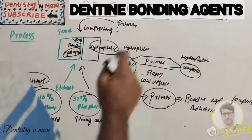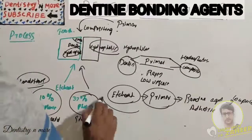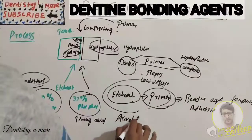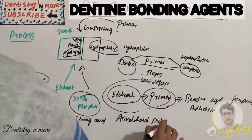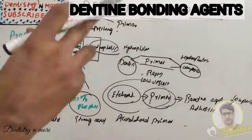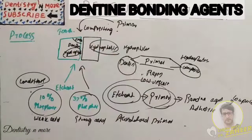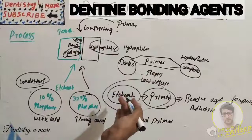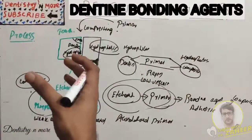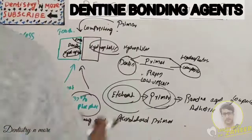Sometimes etchant and primer are combined in a single bottle as an acidified primer - the primer contains the etchant within it. In that case, we need to wait for a longer period because the etchant must first demineralize the tooth, then the primer enters and creates the bonding.